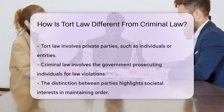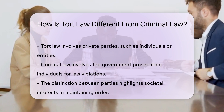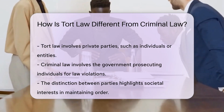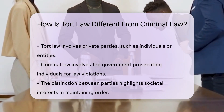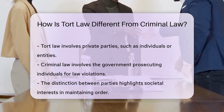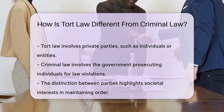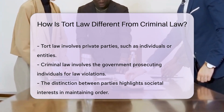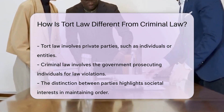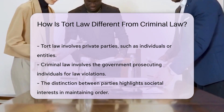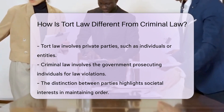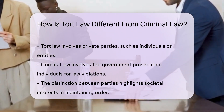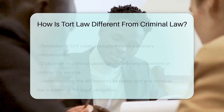Another key difference lies in the parties involved. Tort law involves private parties, where an individual or entity sues another for damages. Criminal law involves the government prosecuting an individual for violating laws. This distinction highlights the societal interest in maintaining order and protecting citizens.